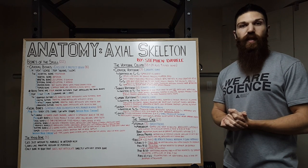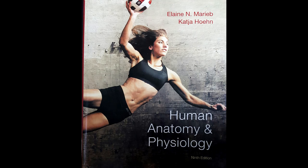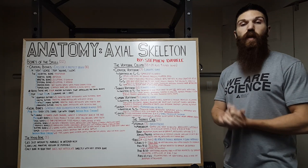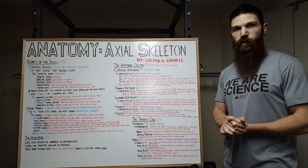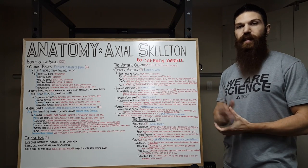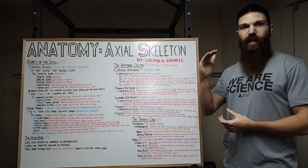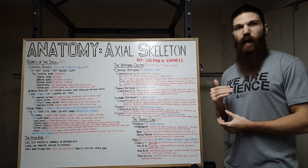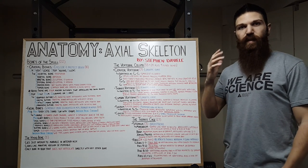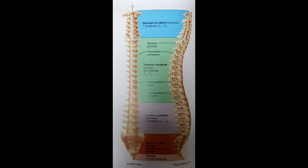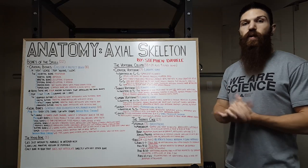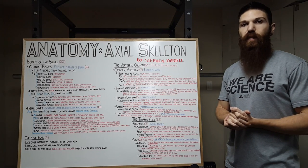All of the images that I'm going to be showing today come from Marieb's Human Anatomy and Physiology, so if you are interested in brushing up on your anatomy, pick up a copy of it. Just a quick recap from last week's lecture: there are 206 bones in the human body and they can be subdivided into two categories, the axial skeleton and the appendicular skeleton. The axial skeleton being our skull, our rib cage, and our vertebral column. In total, there are 22 bones that make up the skull.